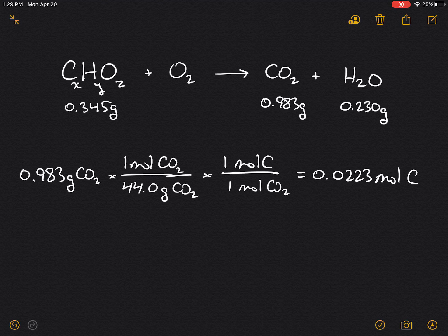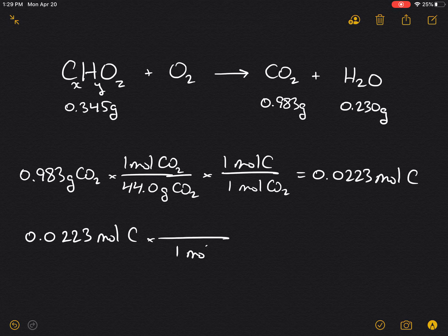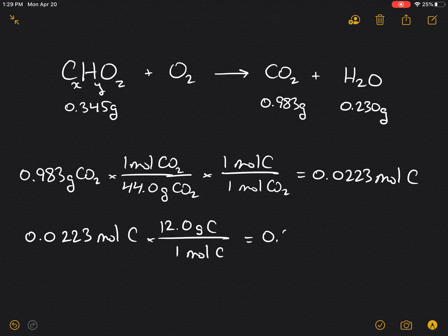Let's also solve for the mass of carbon. 0.0223 moles of carbon times 12.0 grams per mole will yield 0.268 grams of carbon. Now let's move on.